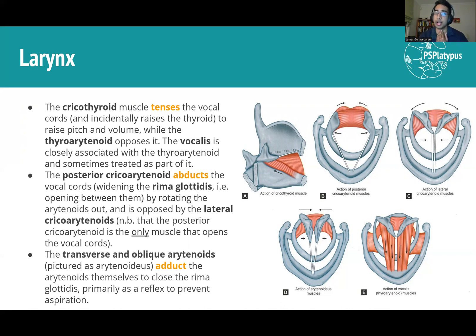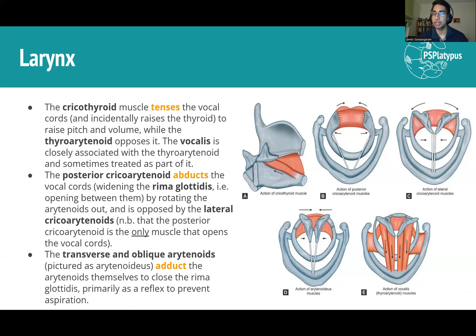If you sing at increasingly high pitches, you can actually feel your thyroid tilting forward and upward because the cricothyroid is working hard as the main muscle responsible. The thyroarytenoid and vocalis do the opposite — they relax the vocal cords and make them shorter. The vocalis refers specifically to the medial fibres, though sometimes it's treated as part of the thyroarytenoid. You need a balance between them, because if the cords are too loose or too tight, you don't actually produce sound.